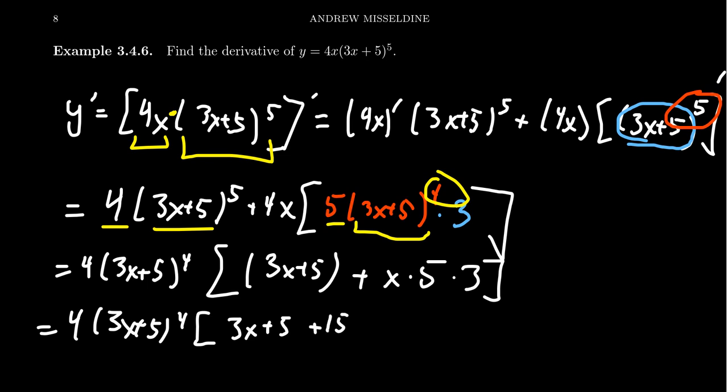For the next one, we're going to end up with 15x, which is just 5 times 3 right there. And so combining together the like terms in those brackets, we end up with 18x plus 5, which is our derivative, which we had a derivative earlier, right?